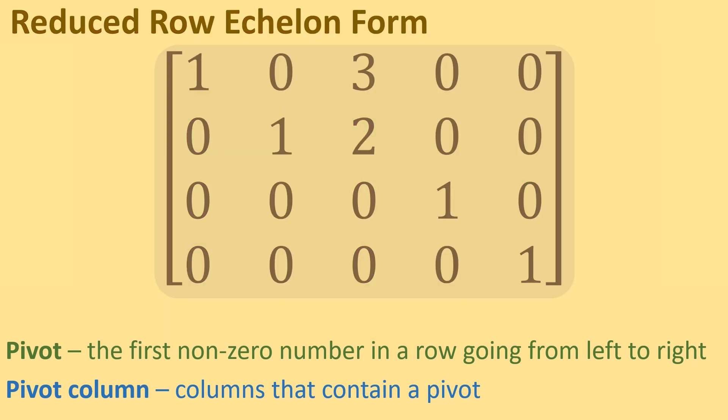Let's consider a matrix in reduced row echelon form. Here, our pivots jump out. Notice, the leftmost nonzero in any row is 1. So 1 is our pivot in row 1, row 2, row 3, and row 4.